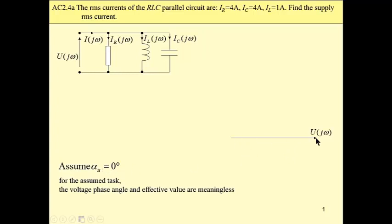For our calculations, this is absolutely meaningless, so we set the input voltage as reference. One by one, we may add these three currents. Let's start with the current flowing through the resistive branch. This current has the same phase angle as U, zero, and its magnitude is 4A.